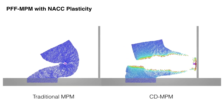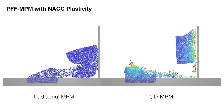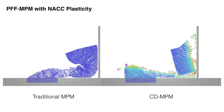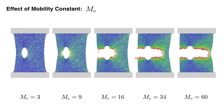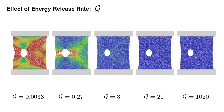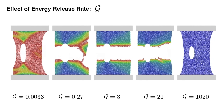Here we compare traditional MPM with CDMPM for a high-velocity impact. Note that we combine PFF-MPM with NACC plasticity to demonstrate their successful union. The color reflects the phase field values with red being zero and blue being one. The speed of crack propagation can be easily controlled with the crack mobility constant. Similarly, the resistance to damage can be controlled with the energy release rate.